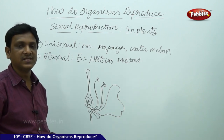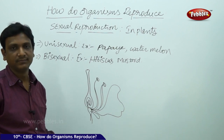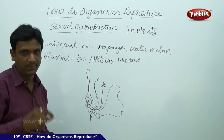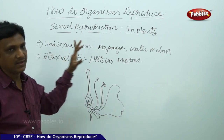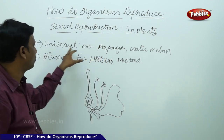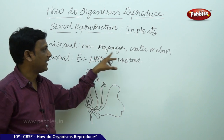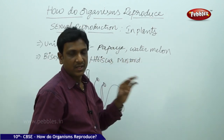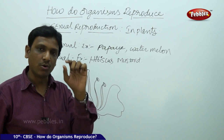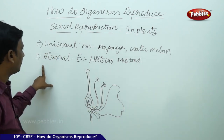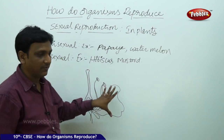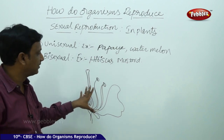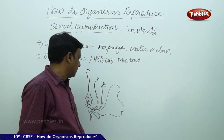The flower is the reproductive unit of the plant. Some flowers consist of both male and female parts; some consist of either male or female parts. Unisexual flowers have either male or female reproductive organs — examples are papaya and watermelon. Bisexual flowers have both male and female reproductive organs — examples are hibiscus and mustard. Here we see a bisexual flower with both female and male reproductive parts.